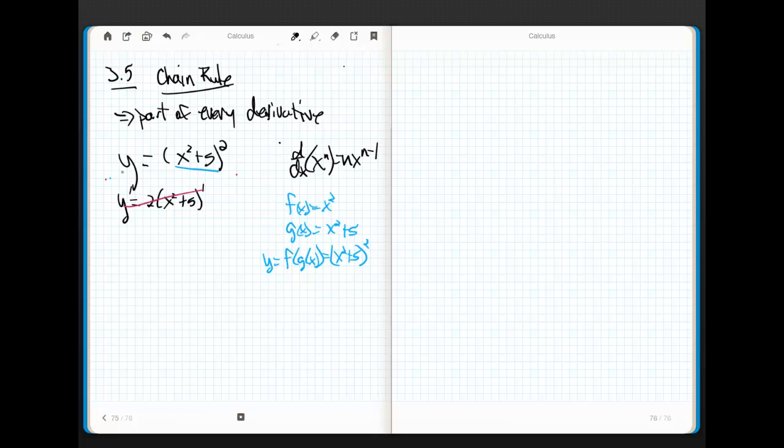If I foil out, if I foil this guy out, I get x squared. This equals x to the fourth plus 10x squared plus 25, right? Just simple foil, x squared times x to the fourth, 5x squared plus 5x squared, et cetera. Now, the derivative of that is equal to 4x cubed plus 20x, which if I factor a 4x out, this is 4x times x squared plus 5.